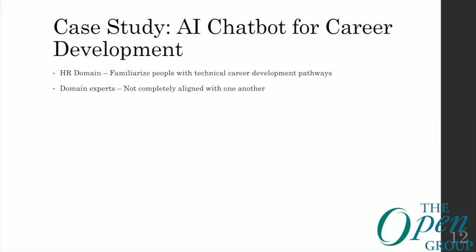I'd like to walk you through an example of a project I'm currently leading where we've built an AI system and I've taken some of these thoughts and put them to practice. We built a simple AI chatbot for career development internal to my company. This system had a relatively narrow scope — its purpose was to answer commonly asked questions for technical career development pathways at IBM, including certification requirements and open group certification. We were fortunate to have domain experts from around the world who were currently guiding folks through these questions — the folks who lived the day-to-day experience of answering questions all the time.